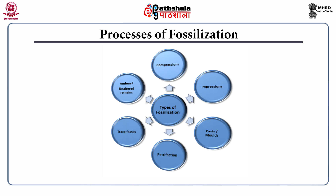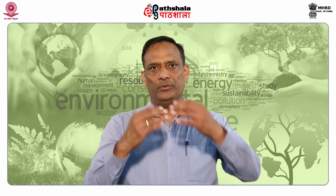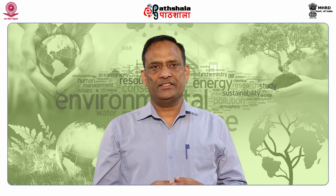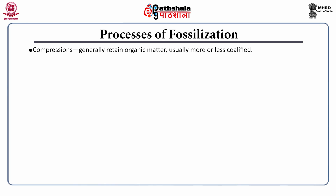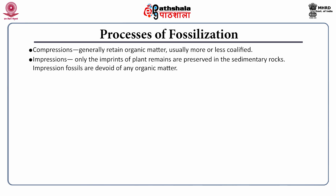These are the different processes by which fossilization takes place. The first one is compression. Compression generally retains organic matter — the coals we have are the result of the compression process of fossilization. Then impressions: as the name indicates, we only have the imprints of plant remains, preserved in the sedimentary rocks. Impression fossils are devoid of any organic matter. In compression we get organic matter, whereas in impression we do not — we just have imprints.